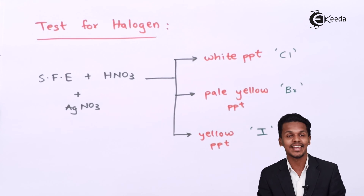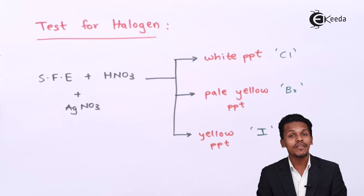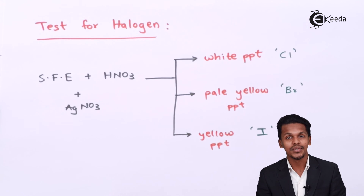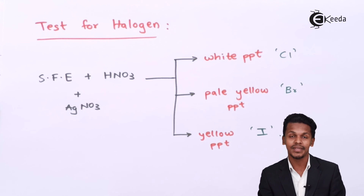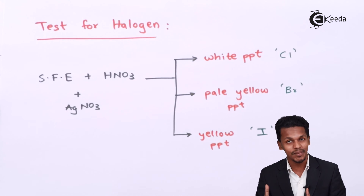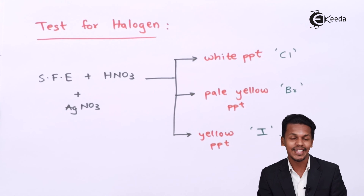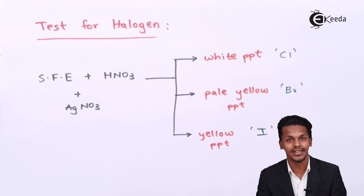So that was the test for detecting nitrogen, sulfur, and halogen in the organic compound. Thank you friends for watching this video. I hope you understood the concepts clearly — that besides carbon and hydrogen, we can also detect other elements present in organic compounds using Lassaigne's method. Please share this video with your friends and don't forget to subscribe to the Ikeda channel.